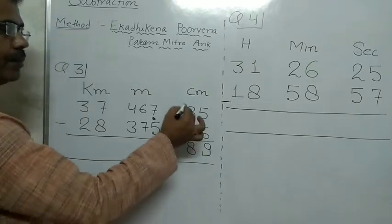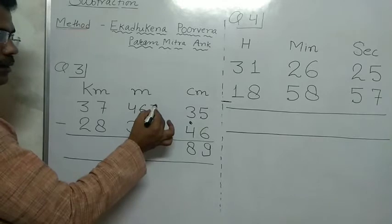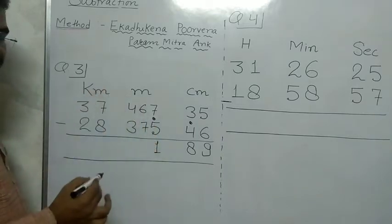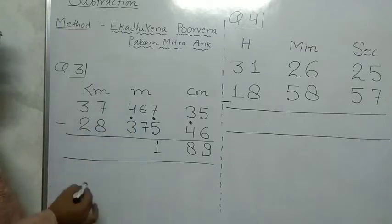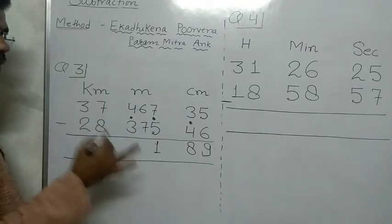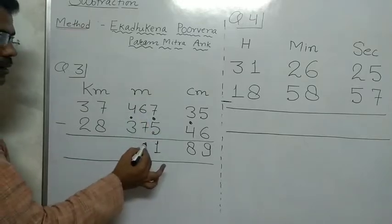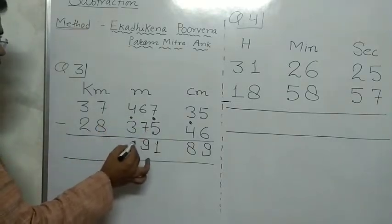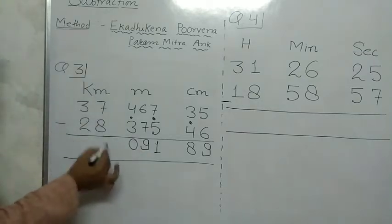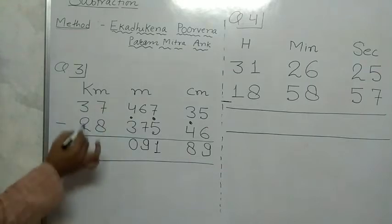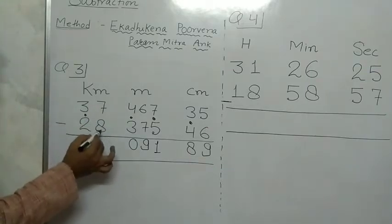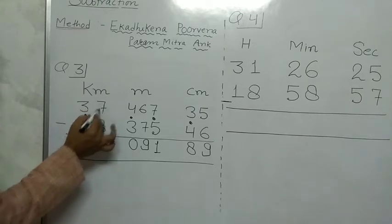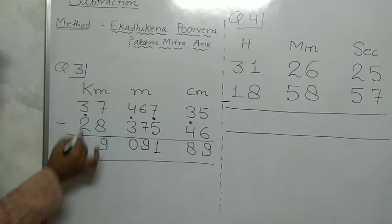We add Pramikkar Ankh 1 to the upper digit. 7 minus 6 is possible, so we write 1. Next, 7 cannot be subtracted from 6, so we use Ekatecane Purvend. Pramikkar Ankh of 7 is 3. 3 plus 6 is 9. Then 4 minus 4 is 0. 8 cannot be subtracted from 7, so we use Ekatecane. Pramikkar Ankh of 8 is 2. 2 plus 7 is 9. And 3 minus 3 is 0.